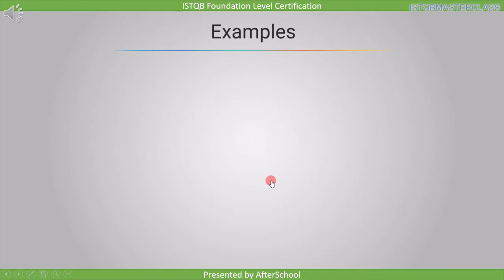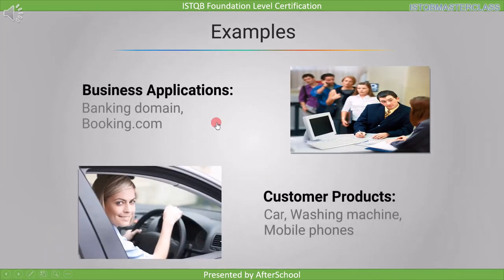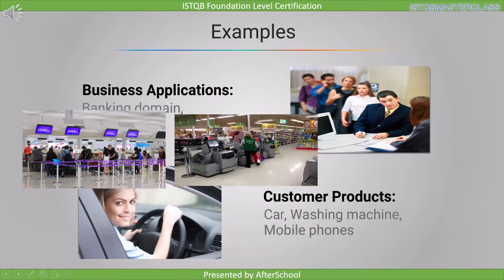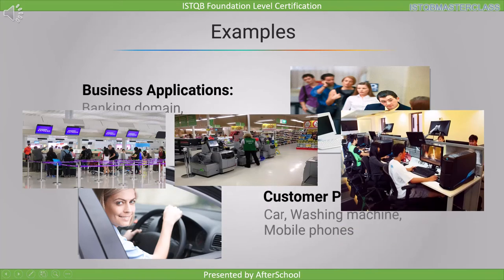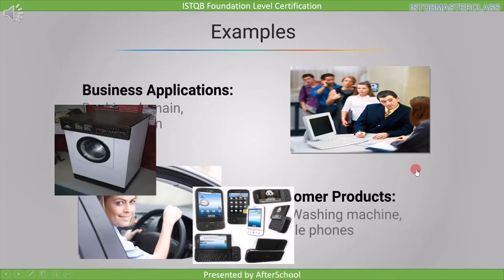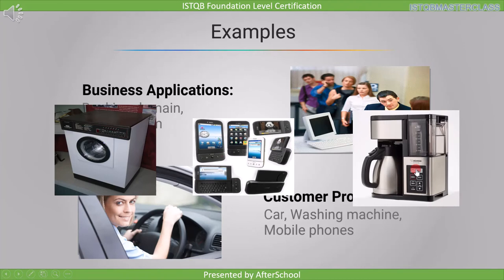Now let's see some applications of software. The first example is business applications and the second one is customer products. Examples of business applications are when you go to an airport to book your ticket, or when you go to a supermarket to buy items, or when you are working in the office. Software is all around us. Some examples of customer products are washing machines, mobile phones, or coffee makers — they all contain software within them.